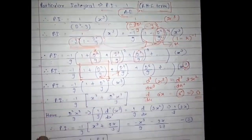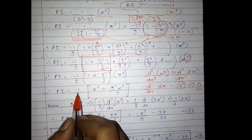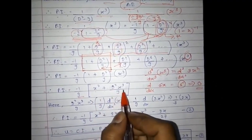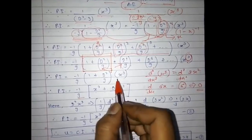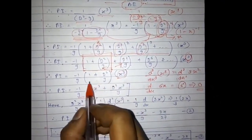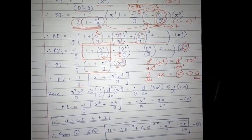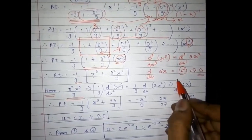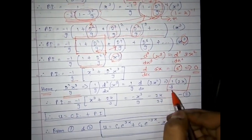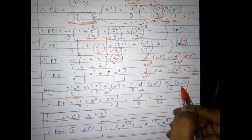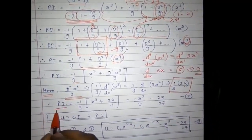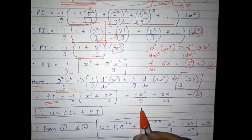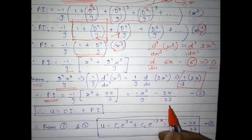Therefore PI = -1/9 × (x³ + D²(x³)/9). Differentiating x³ twice gives 6x. Substituting: PI = -1/9 × (x³ + 6x/9), which simplifies to PI = -x³/9 - 2x/27.